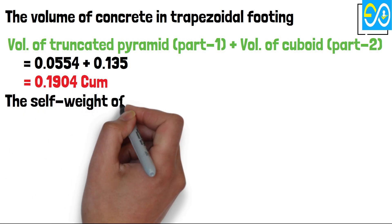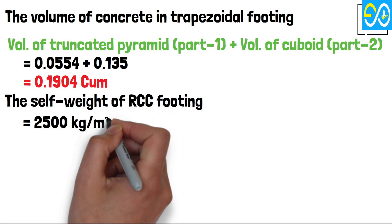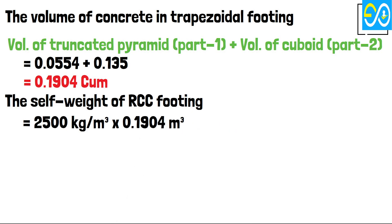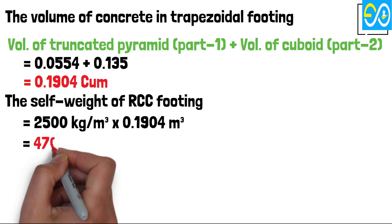The Self-Weight of RCC Footing equals 2500 times 0.1904 equals 476 kilograms.